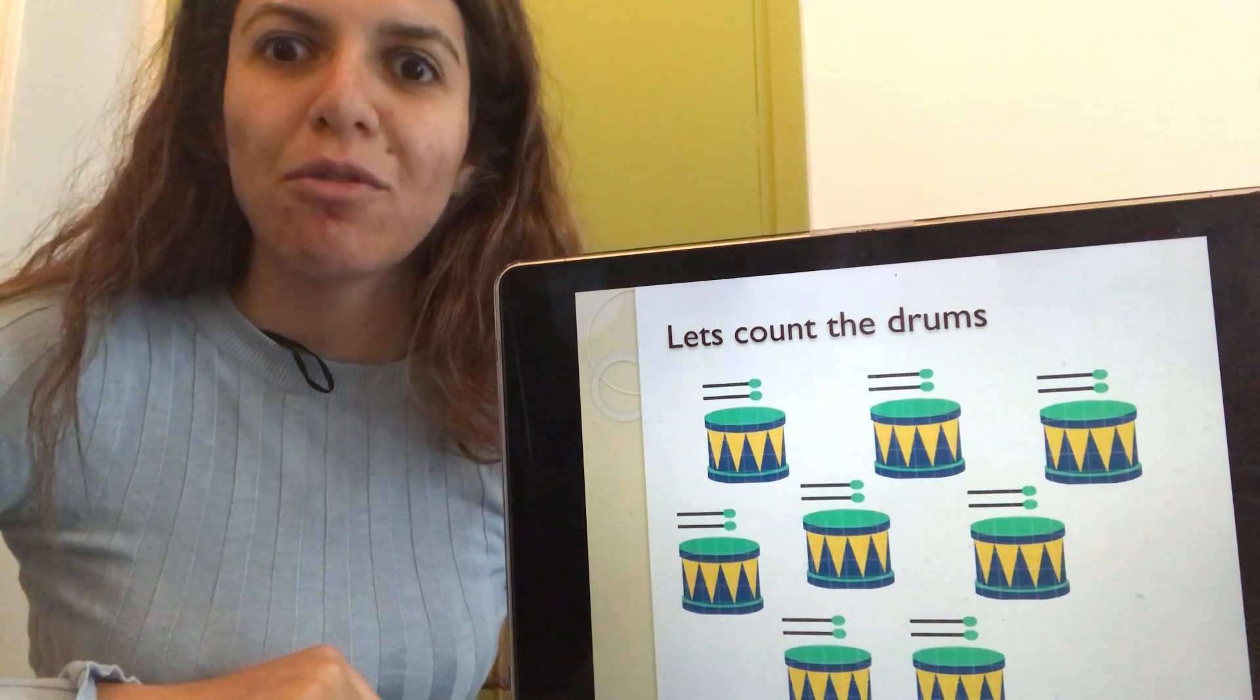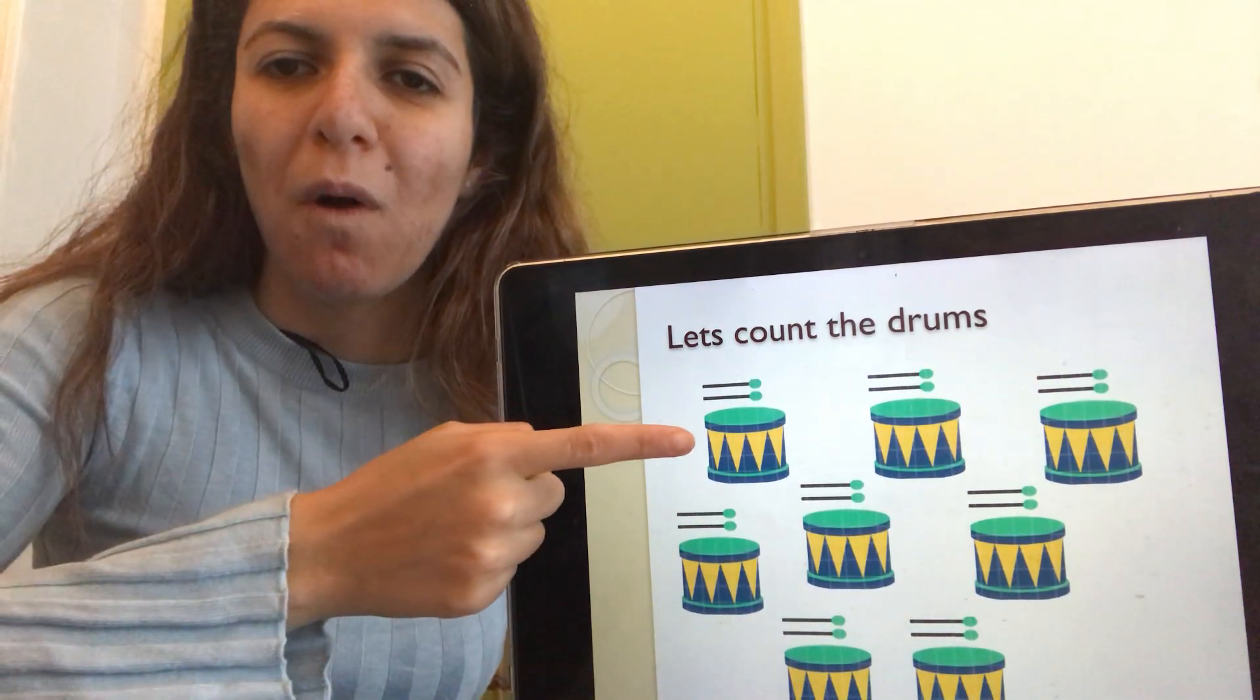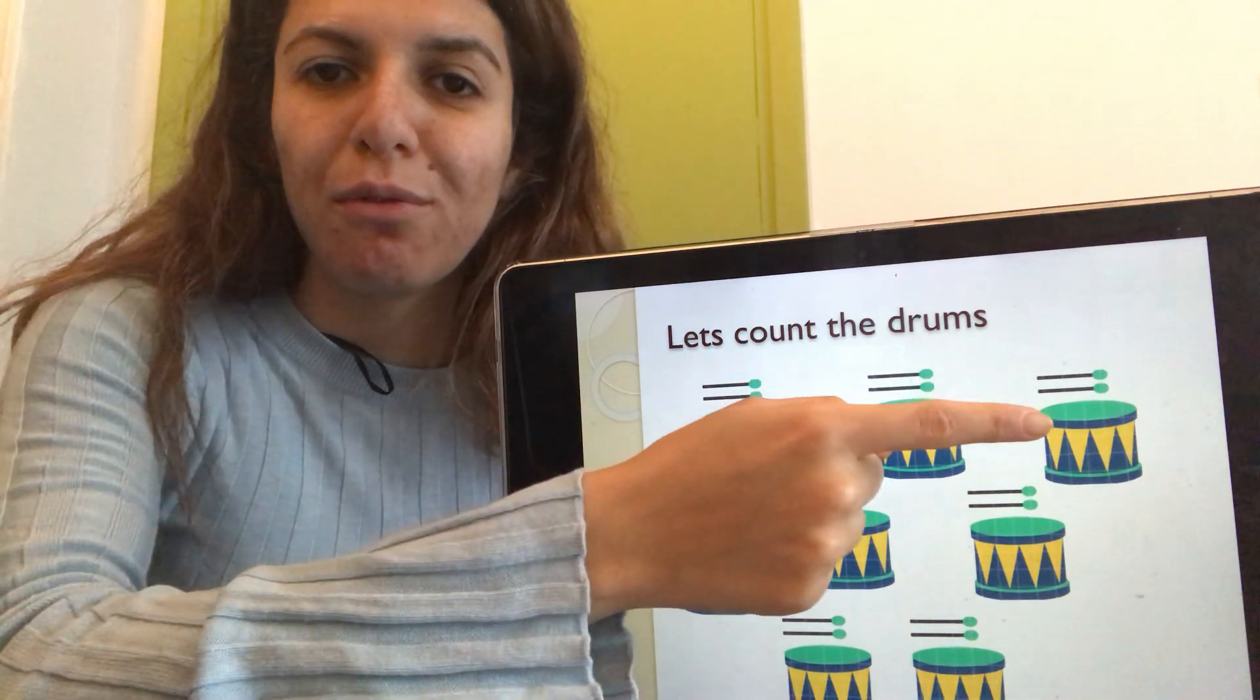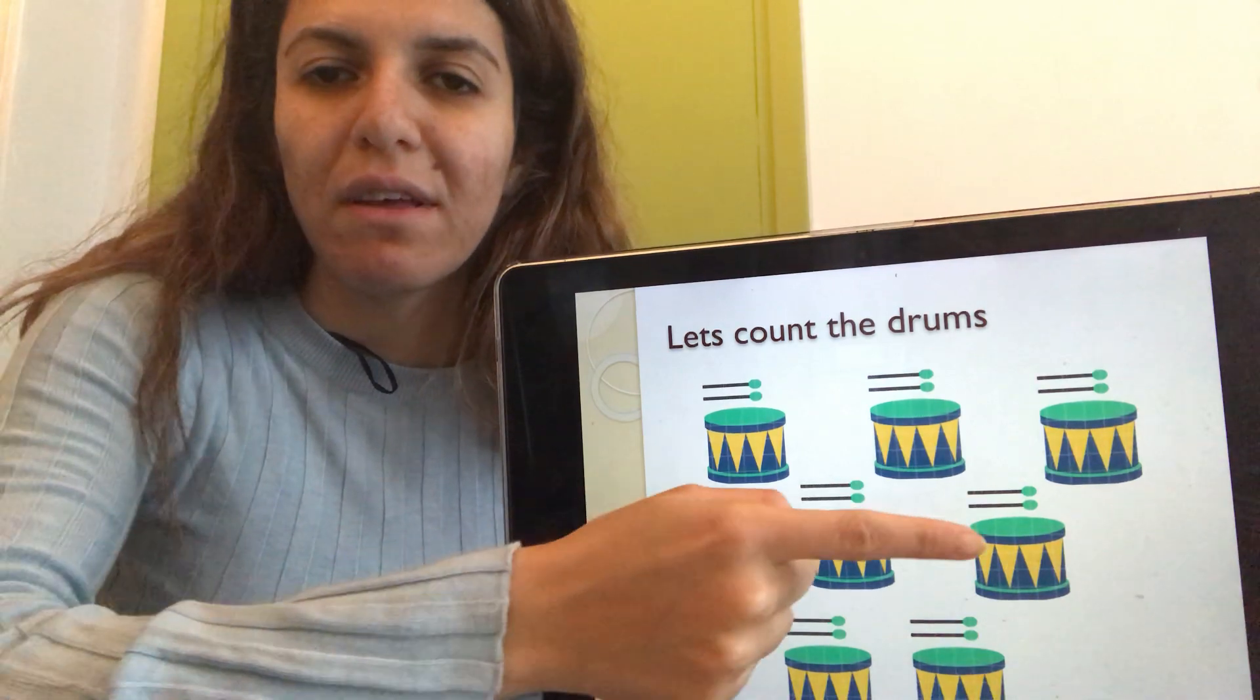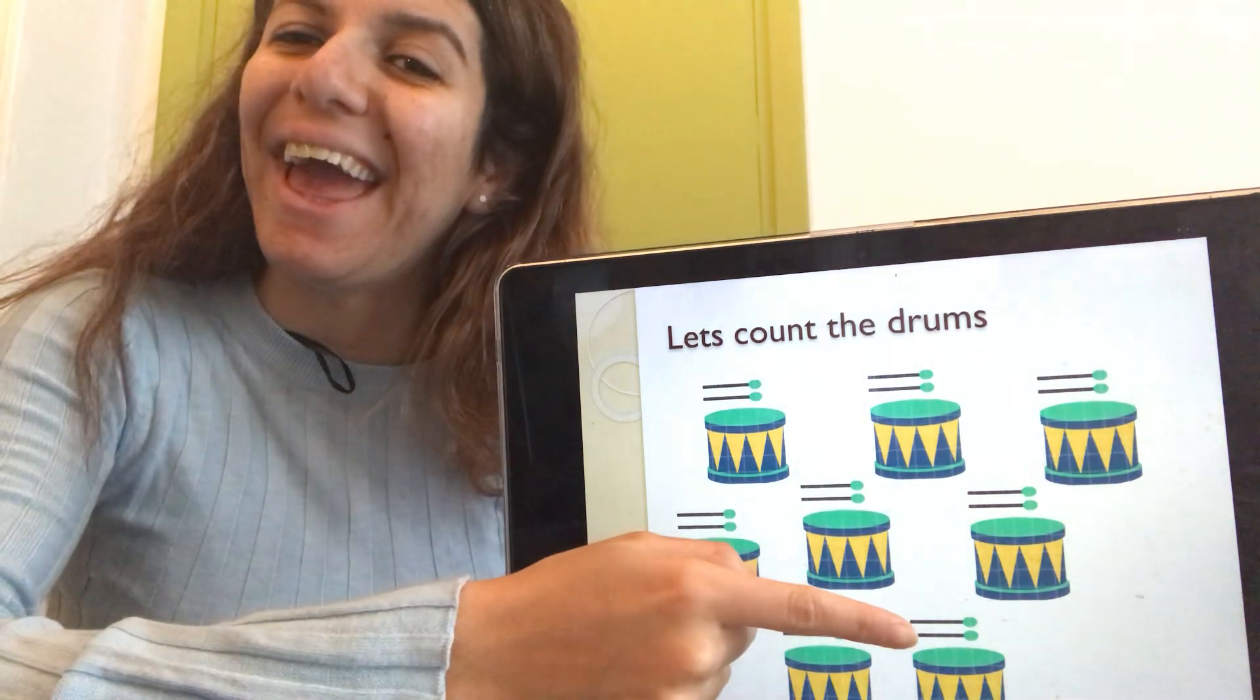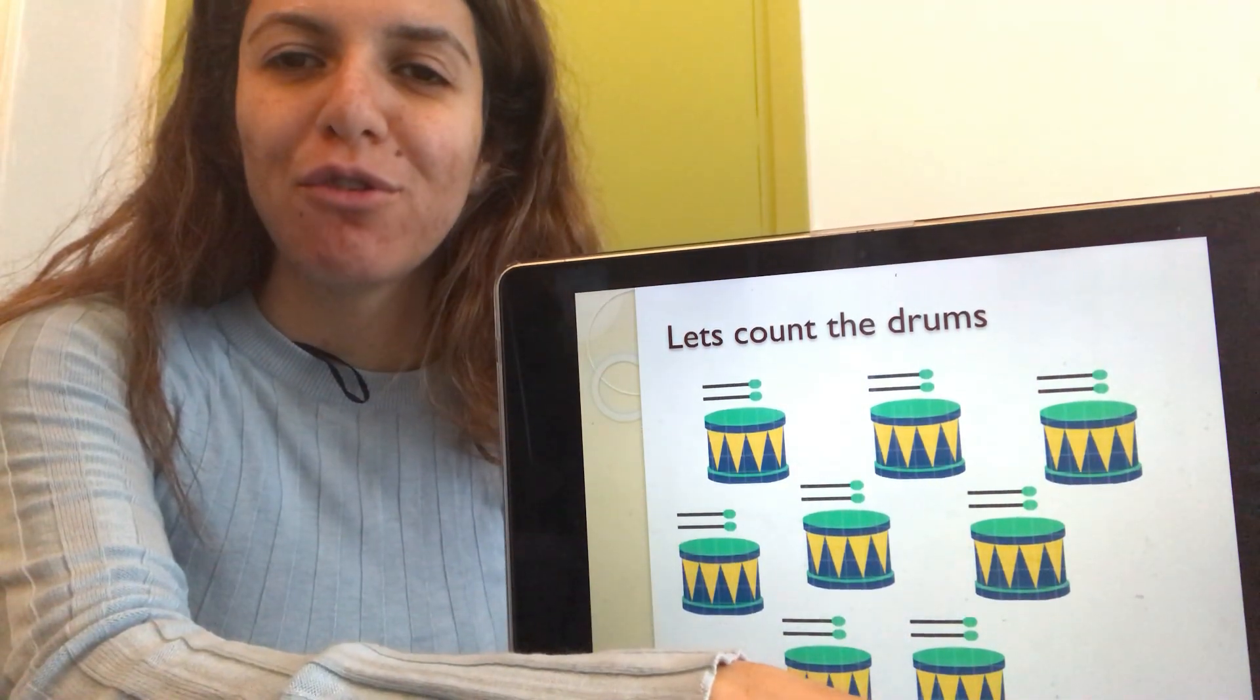Let's count how many drums there are. One, two, three, four, five, six, seven, eight. Well done. Eight blue drums.